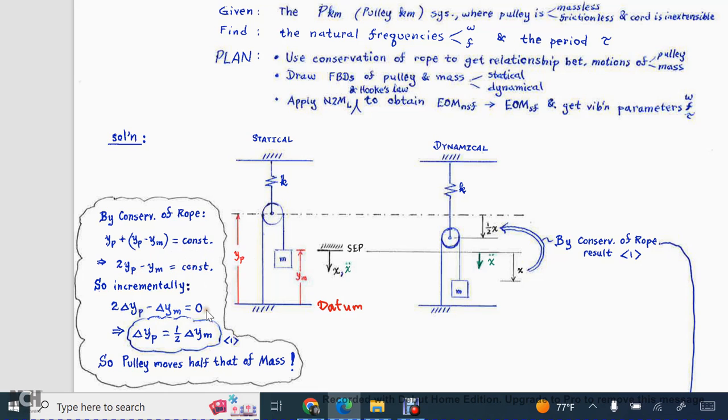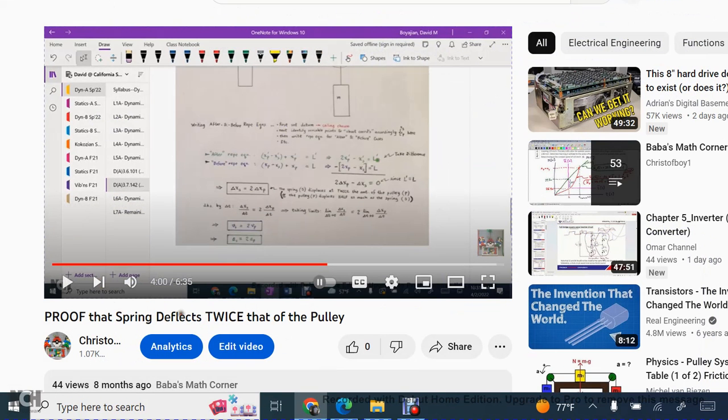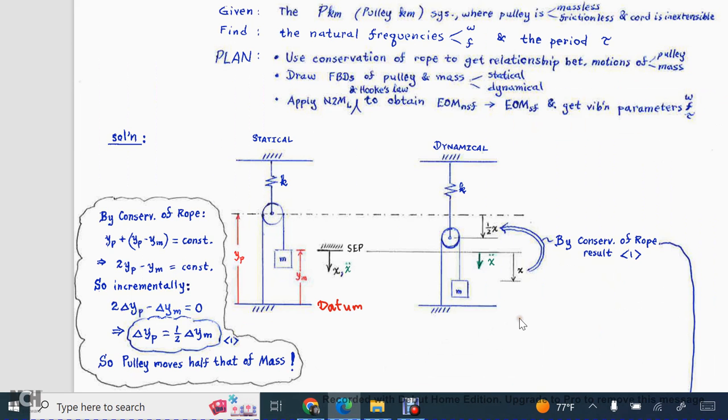Incrementally, you get this result, which leads you to this result. That is to say, the pulley is moving at half that of the mass. Now you may wonder where I got a zero when in the incremental form, whereas it was the constant previously. To that end, I'm going to urge you, if you're needing a little refresher, to go back to this video that I produced, particularly at about the four-minute mark. Over there we prove why, when you bring it into its incremental form, the thing becomes zero.